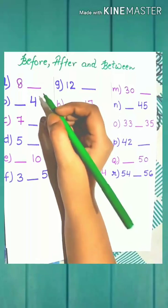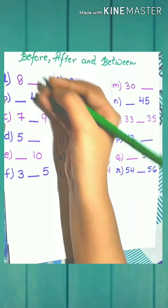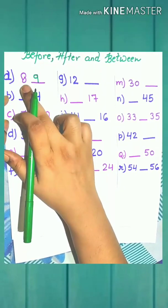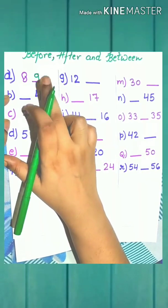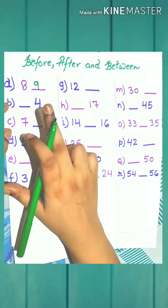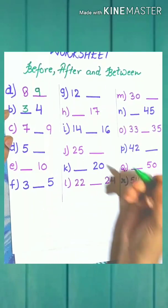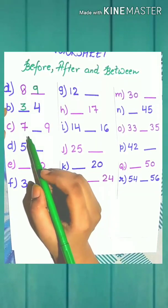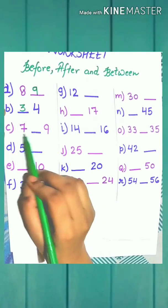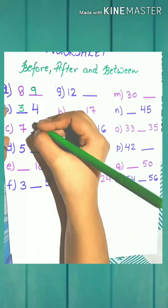What comes after 4? 9. Good. What comes before 4? Yes! 3. What comes between 7 and 9? Yes! 8.